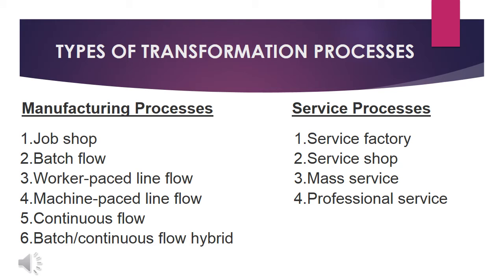Let's proceed to the types of transformation processes. There are two main categories: manufacturing processes and service processes. Manufacturing processes refer to the making of products by hand or with machinery. Service processes refer to the provision of services to persons by hand or with machinery. Under manufacturing processes: job shop, batch flow, worker-paced line flow, machine-based line flow, batch continuous flow hybrid, and continuous flow. Under service processes: service factory, service shop, mass service, and professional service.